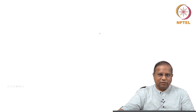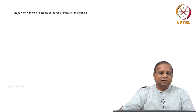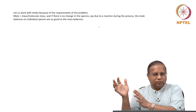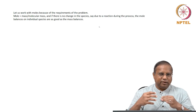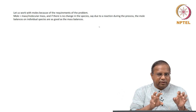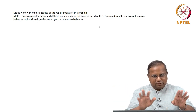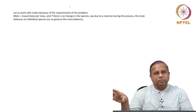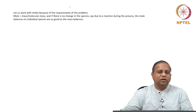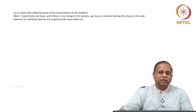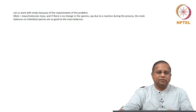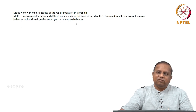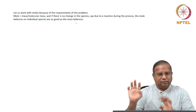We are going to work with moles because we need molar flow rates. Typically, mass is most comfortable to work in, since moles of a species can change during a reaction and molar rates are not as general in applicability as mass rates. But here, there is no reaction, so we can work with moles. If unsure, it is better to work with mass and then convert: moles equals mass divided by molecular mass. If there is no change in species due to reaction, mole balances on individual species are as good as mass balances.